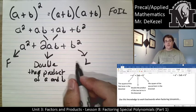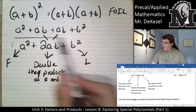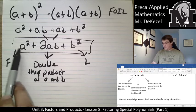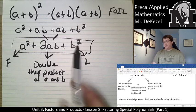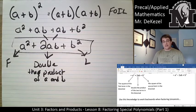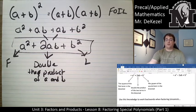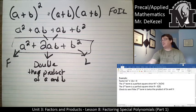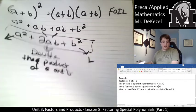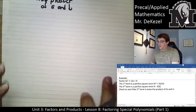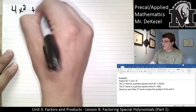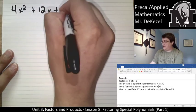So that means if we have something in this form where the middle term is double the product of a and b, we can write it as (a + b) squared. We're going to use that knowledge to work backwards when factoring trinomials. So let's give it a go. The first example wants us to factor 4x squared plus 12x plus 9.